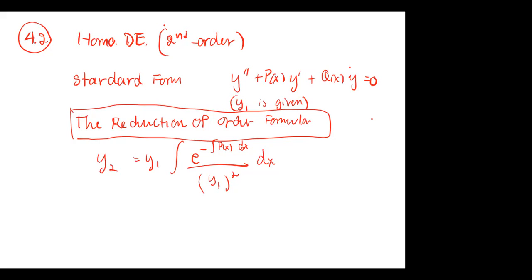Some of the examples in section 4.3 — if you already went over those notes — when you find the solutions of the homogeneous equation, you have case one, case two, case three. For case two, when you have a repeated solution, you have only one m value from the auxiliary equation. How do you find the second solution? You have to multiply by x, and that comes from the reduction of order formula — specifically for the repeated roots version.